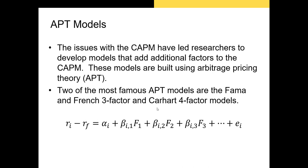If there are problems with the CAPM and anomalies exist, the answer is to develop additional models. One class of models that have been developed are called arbitrage pricing theory models, or APT models for short. These models take the CAPM and add one or more risk factors, then regress the excess return of the stock on all of those risk factors. The two most prominent APT models you should know about are the Fama-French three-factor model and the Carhart four-factor model.